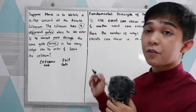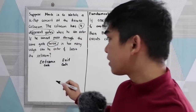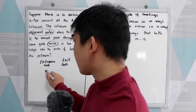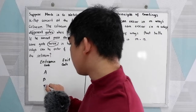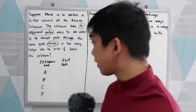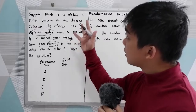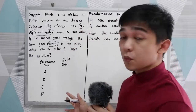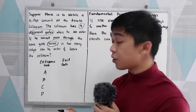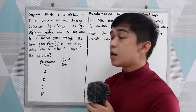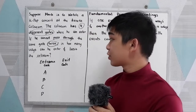Now we have four different gates. So let's say for the entrance we have A, B, C, and D — four different gates: one, two, three, four. So this method is what we call the listing method, where we need to list or write all the possible outcomes or routes of Mark.